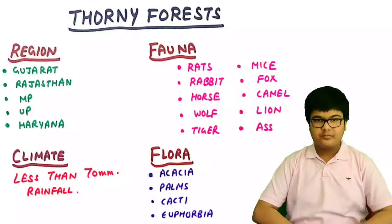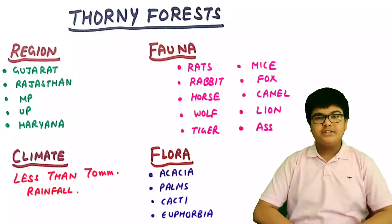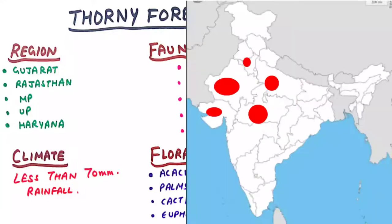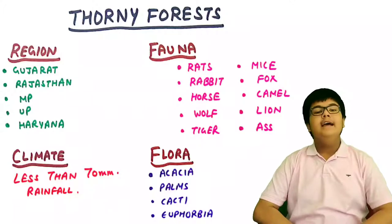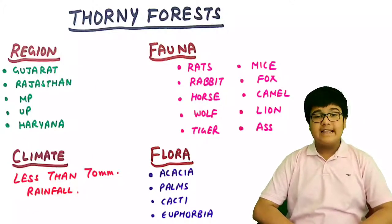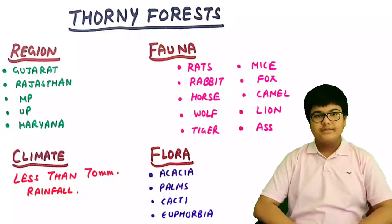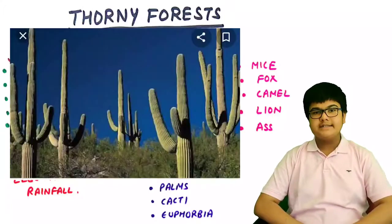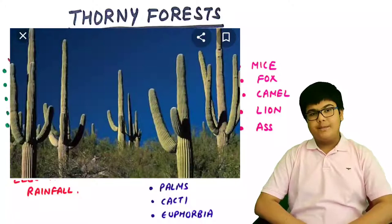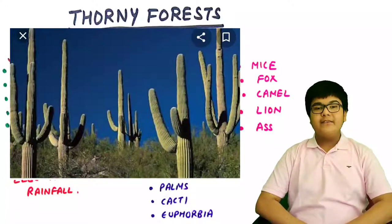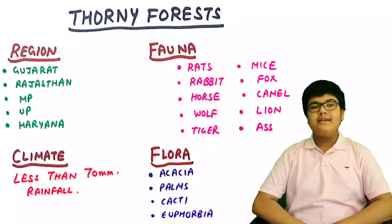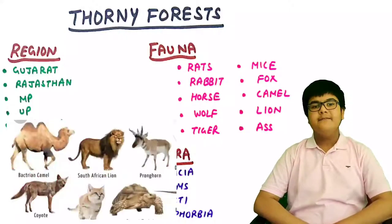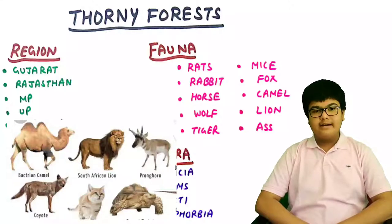Fourth, thorny forests are found in Gujarat, Rajasthan, Madhya Pradesh, Uttar Pradesh, and Haryana, receiving less than 70 cm of rainfall. Vegetation found here includes acacia, cactus, palms, and euphorbias. Animals found in these forests include rats, mice, rabbits, fox, wolf, and sheep.